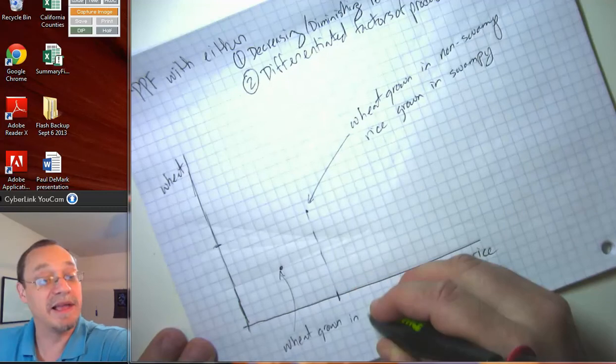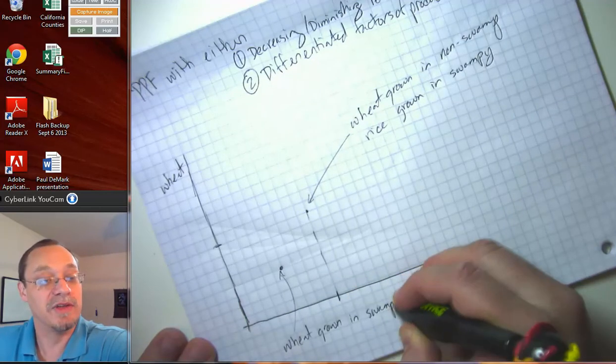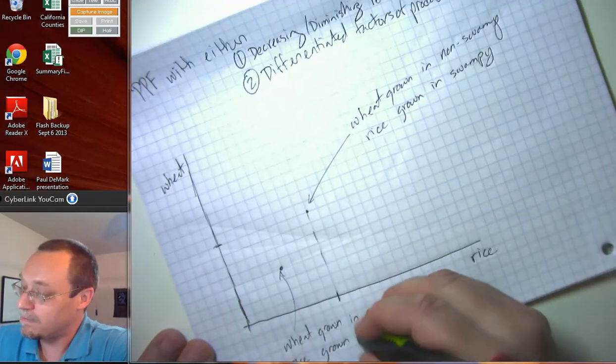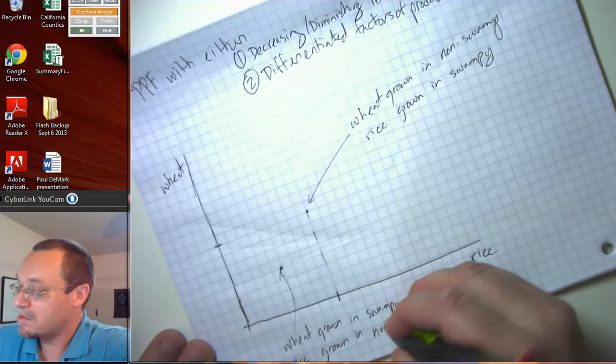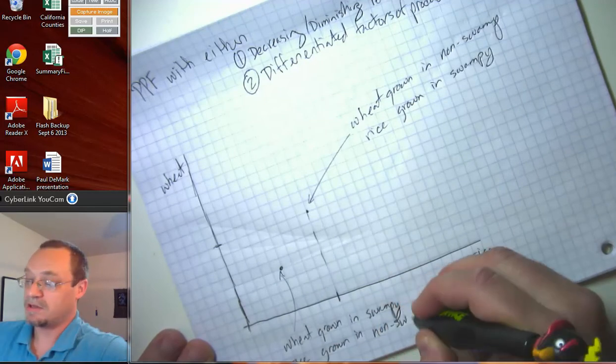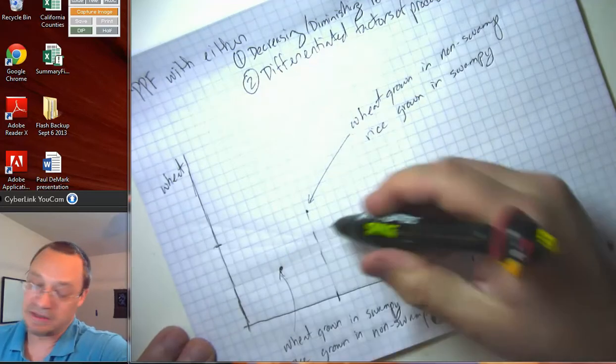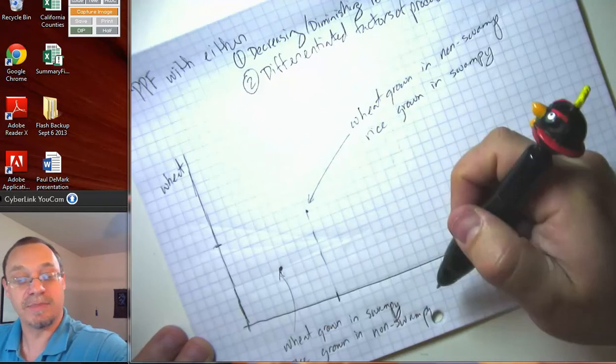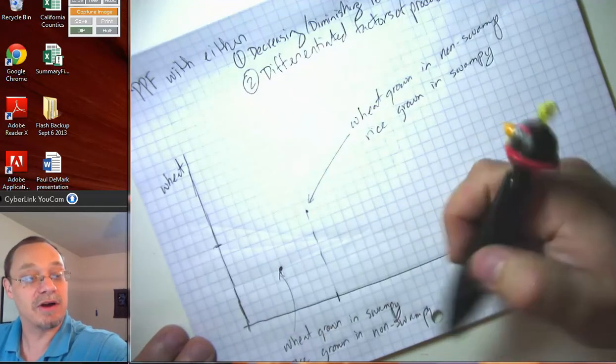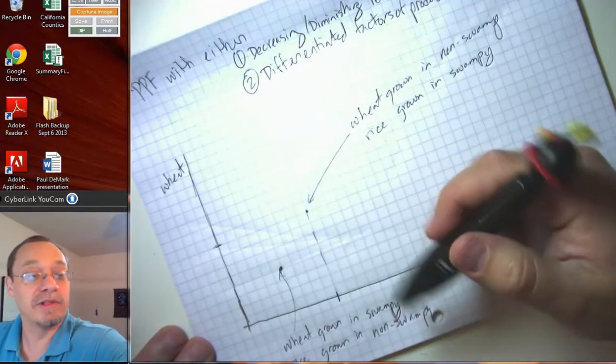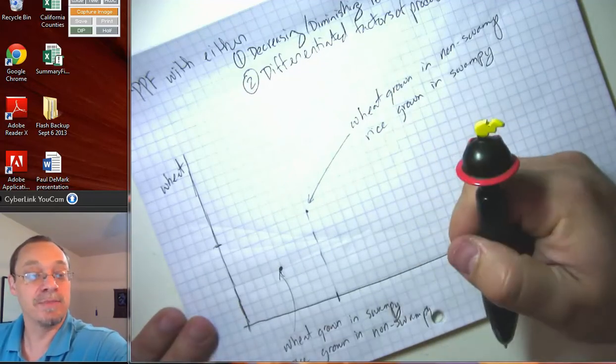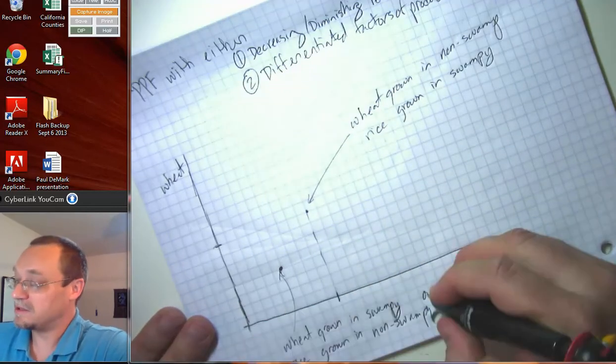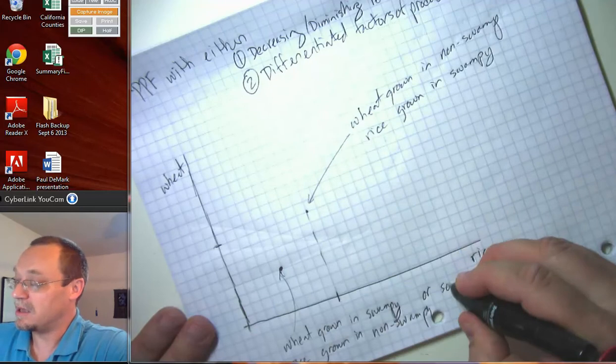And in that case, we get less of both goods. We're being sort of inefficient and stupid. So you can see why points that are interior to the PPF are going to be inefficient. It could be because we've organized our production badly. We're using all the land but we've organized it badly.